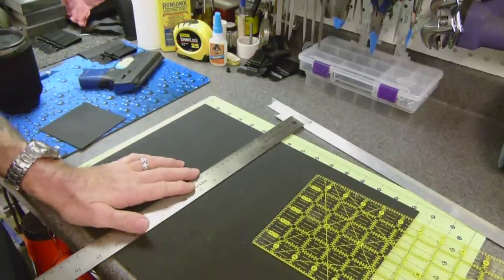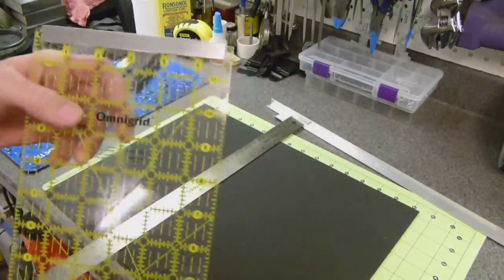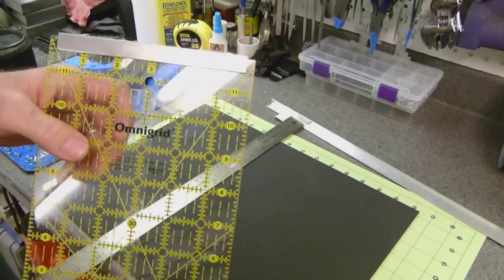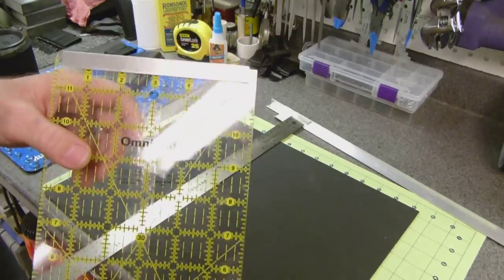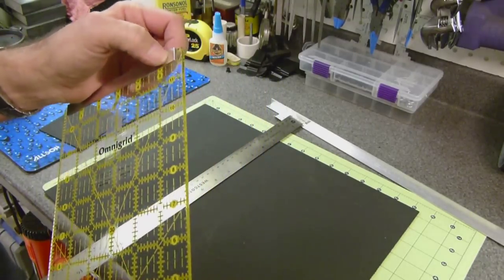So that's it. Just a little quickie on this Omnigrid. I got it at Michael's. I used a Joann's coupon. So I got 60% off. And that's a good little trick to do.